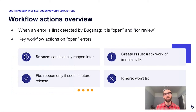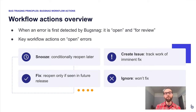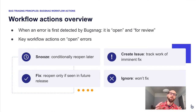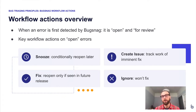Let's quickly review the workflow actions available in BugSnag. When a bug is first detected, it goes into the 'Open' and 'For Review' workflow states. When an error is in an open state, there are key workflow actions you can perform, and these map back to the three categories: things you want to fix immediately, things you may want to fix in the future, and things you're safe to ignore.